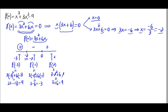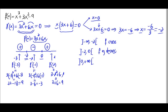So until we reach -2 the derivative is positive, so the function increases. From -2 to 0 the derivative is negative, so the function decreases. Finally from 0 to plus infinity the derivative is positive, so the function increases.